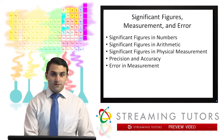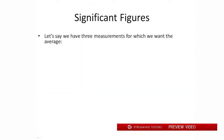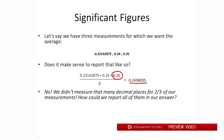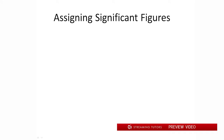So what exactly is a significant figure? Let's take a look. Say we have three measurements: 0.23142875, 0.24, and 0.26, and we want to take the average. Does it make sense to report that average as 0.2438095? Especially because two of our numbers only have two digits — why are we reporting an average with eight digits? This is where significant figures come in. We're going to look at the significant figures of each number to determine how many significant figures should be in our answer.